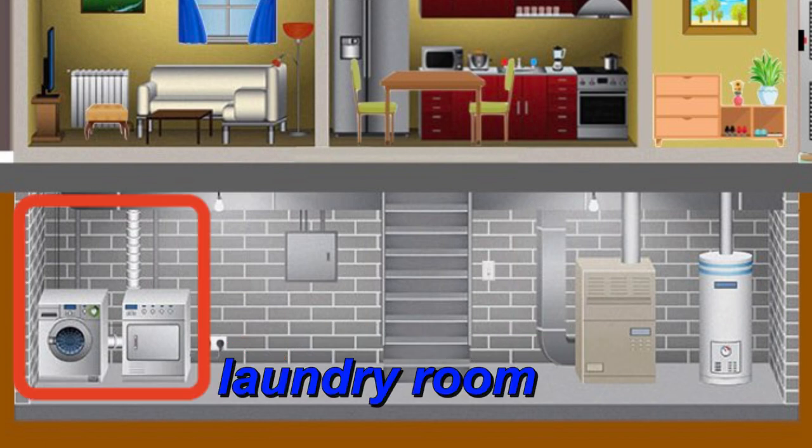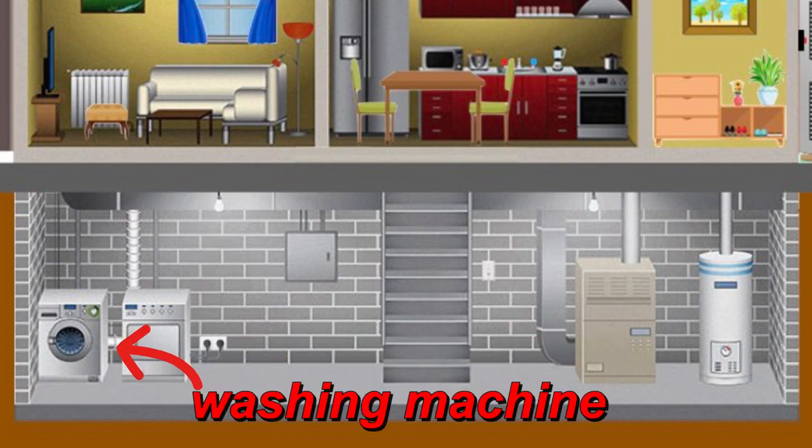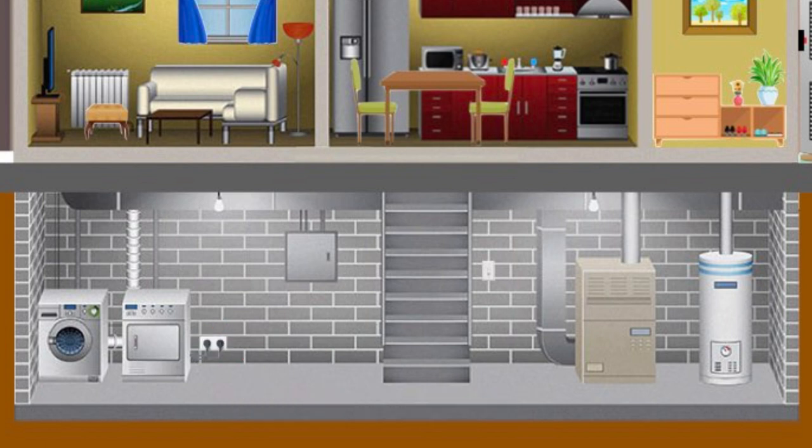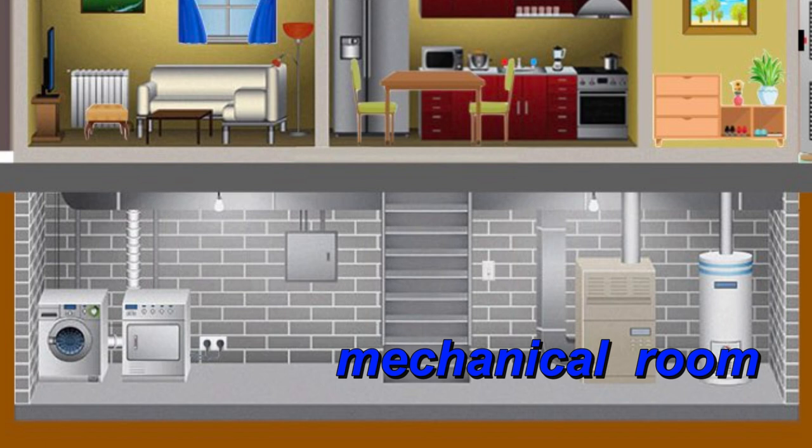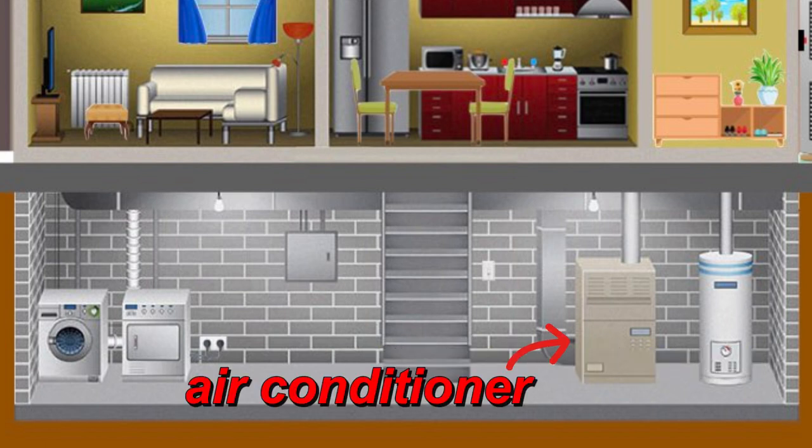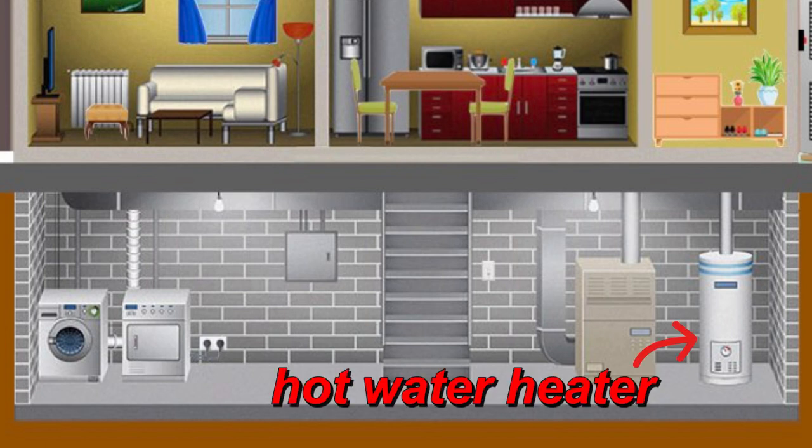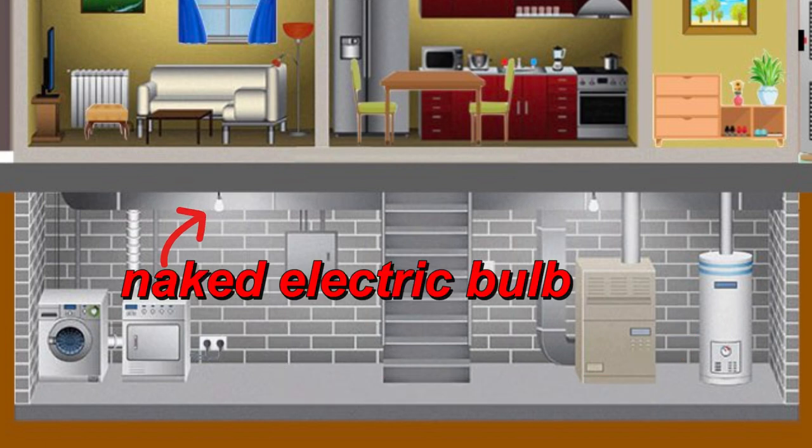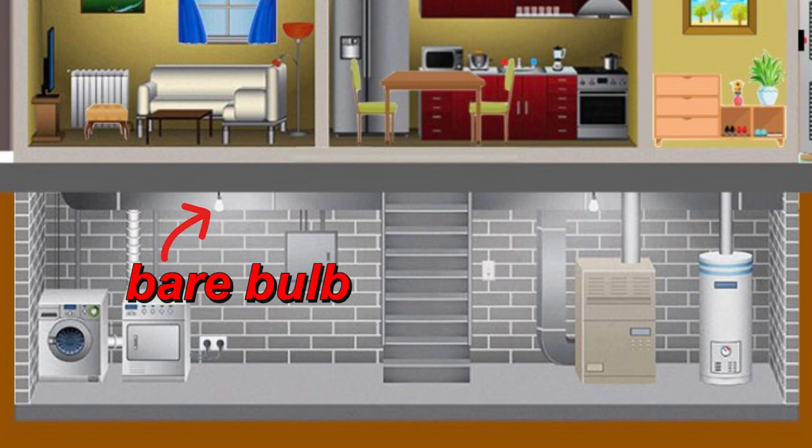Laundry room: washing machine, tumble dryer, utility room. Mechanical room, equipment room: air conditioner, hot water heater, naked electric bulb, bare bulb.